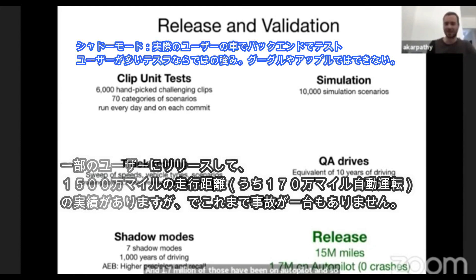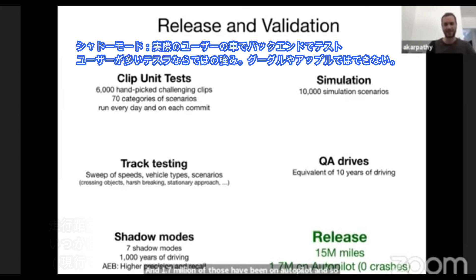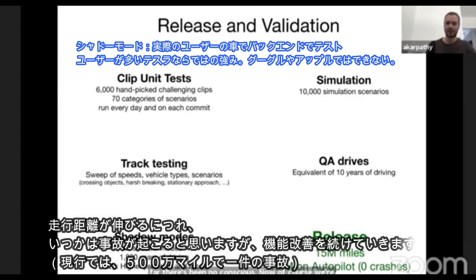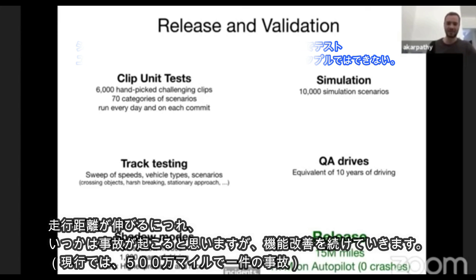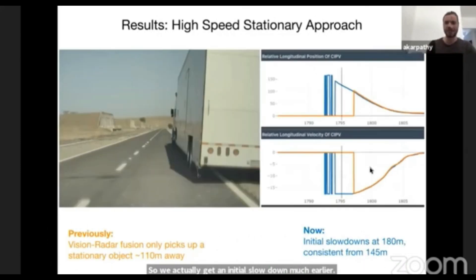So far there have been no crashes. Of course, we're running at massive scale here, so we do expect some crashes at some point. The legacy stack has a crash roughly every 5 million miles or so. But the improvements for the vision stack are not stopping, so we're very confident that we're barking up the right tree and can get this to work incredibly well.